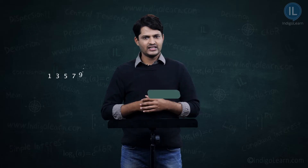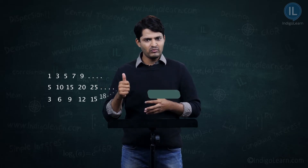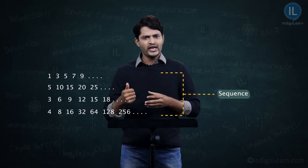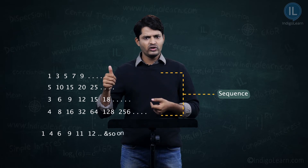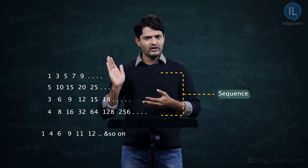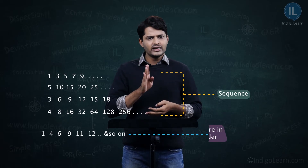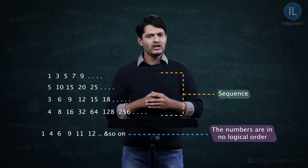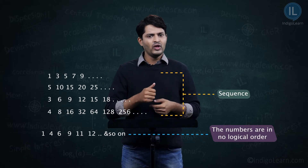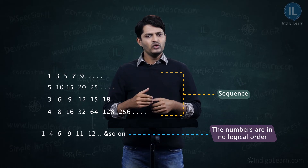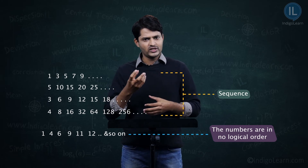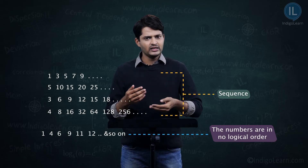To recap: when numbers follow a specific pattern, we call them a sequence. For example, 1, 4, 6, 9, 11, 12 and so on — these numbers move in a random order from left to right, and you cannot identify the next number. Compared to our earlier examples where we could exactly determine the next term, these do not follow any specific pattern and are therefore not sequences. Patterns where you can identify the next term are called sequences.